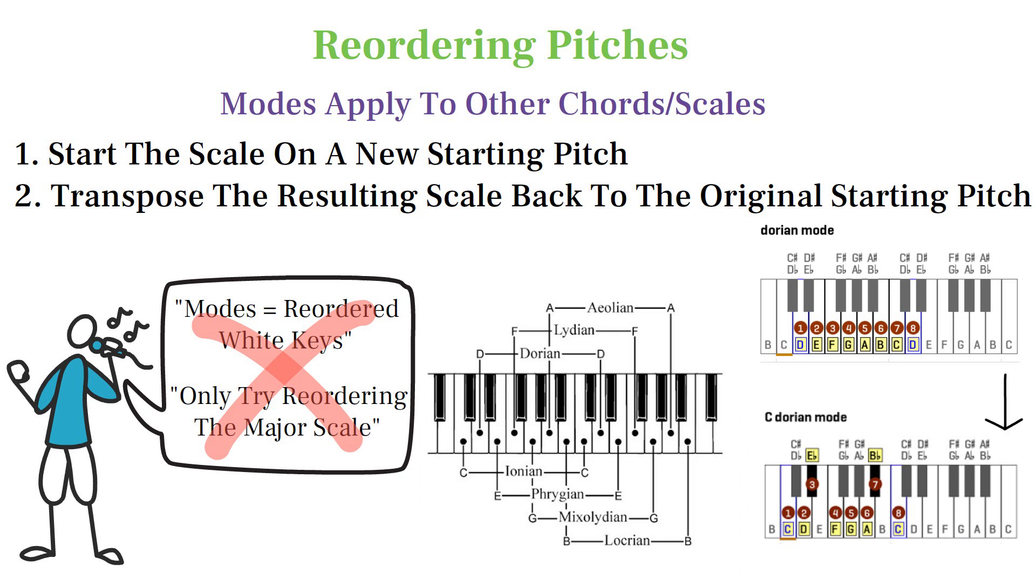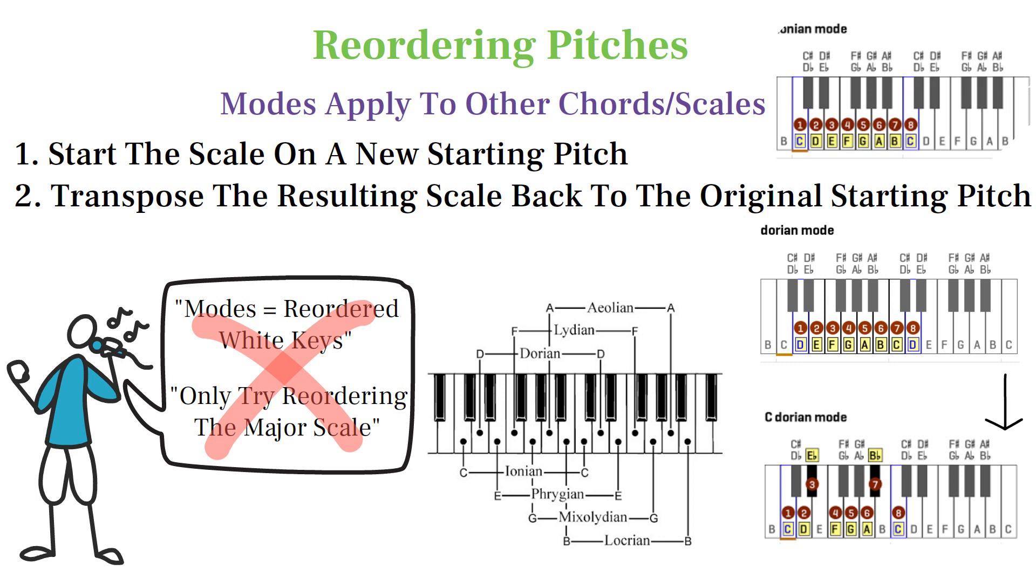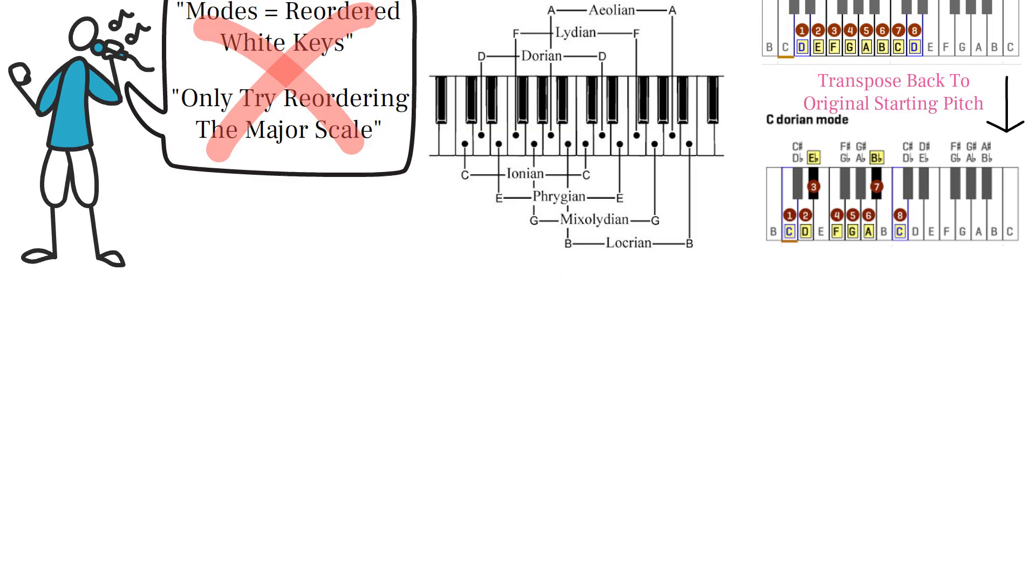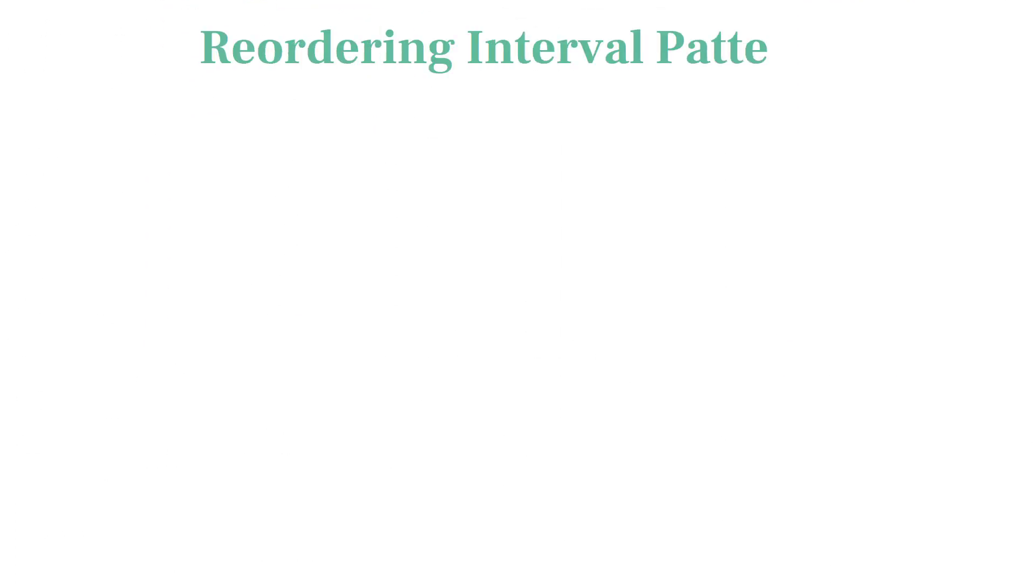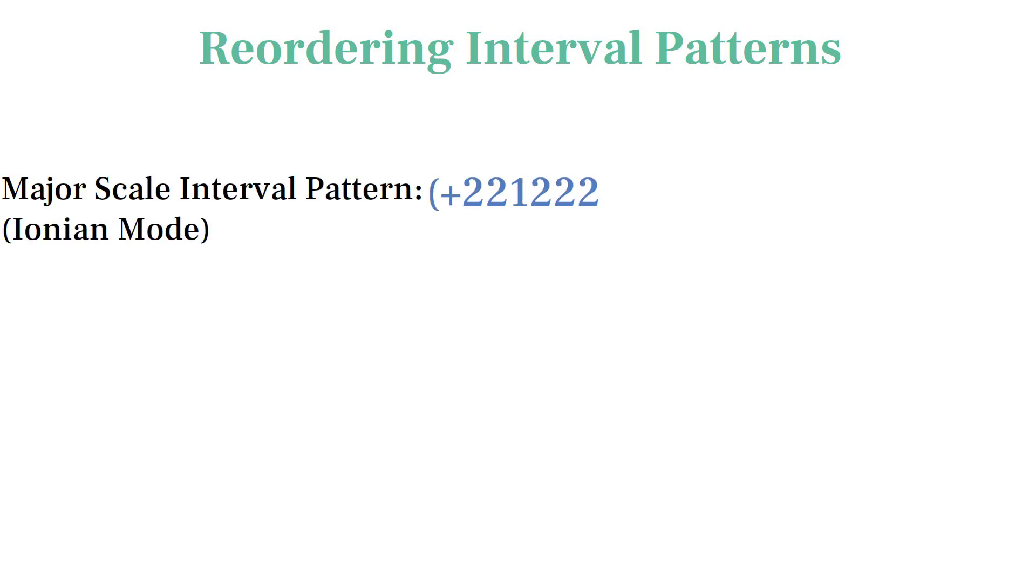In this typical understanding of modes, we rearrange the first pitch of the major scale to the last position in the scale, which results in the Dorian mode. However, a better way of understanding modes that doesn't require transposing is by rearranging the interval pattern.